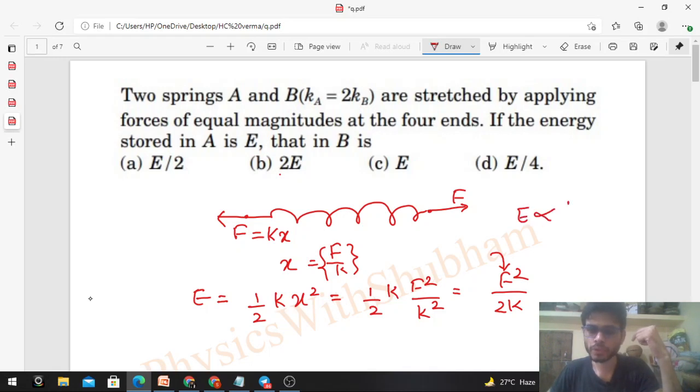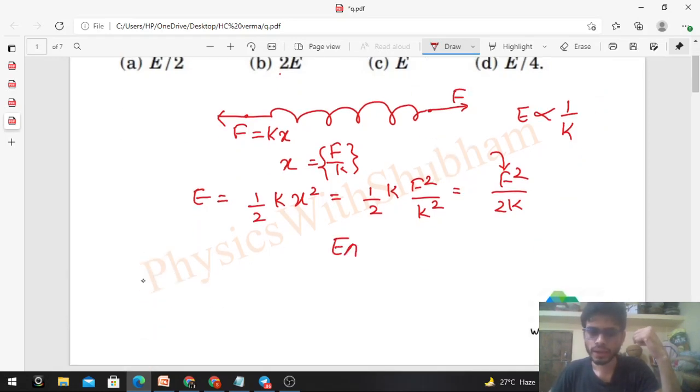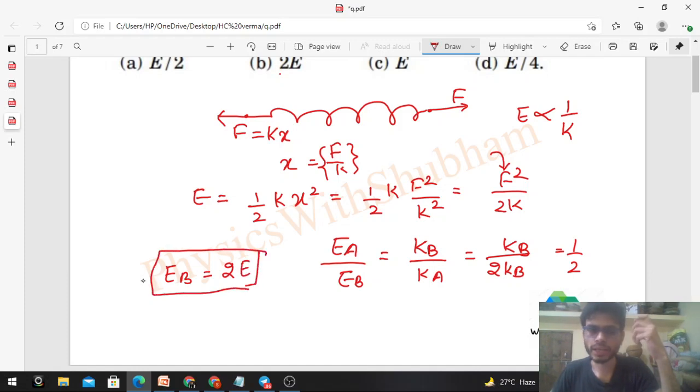So if we have both springs, same force applied. If we have F as a constant, then you can say that energy is inversely proportional to spring constant. So here we can say that EA upon EB, that will be equal to KB upon KA. And KA is twice of KB. So here we can say that EB, energy stored in B, that will be twice of energy stored in A which is E. So EB nikal jayega aur ye jo equation hai ye kaafi interesting hai. Isse aur bhi questions frame ho sakte hai. Mahalo ki is tarah ka question frame ho sakte hai ki find out the force that is required to